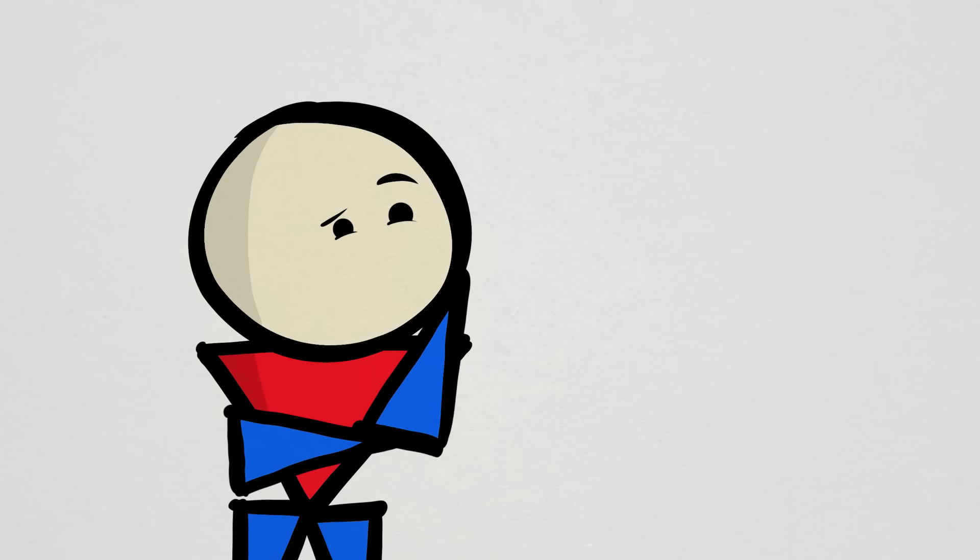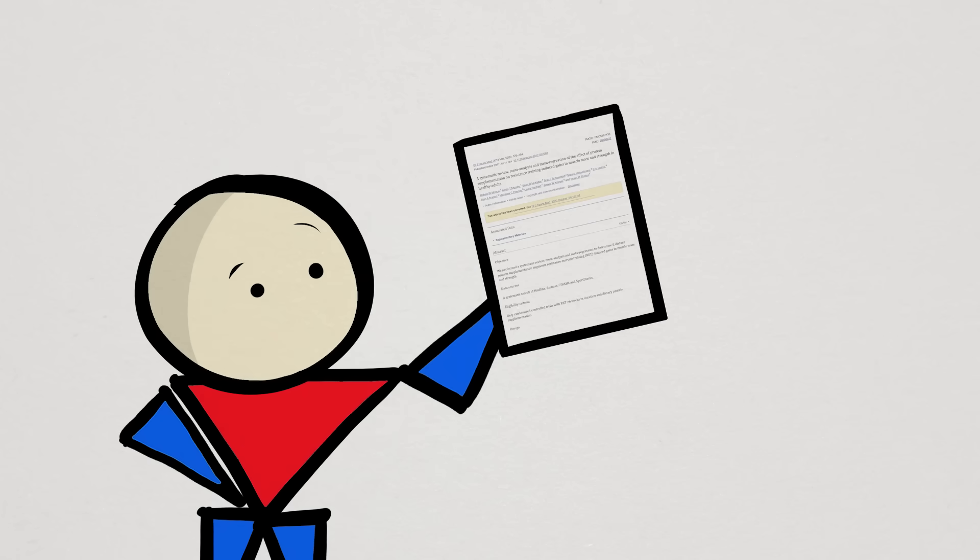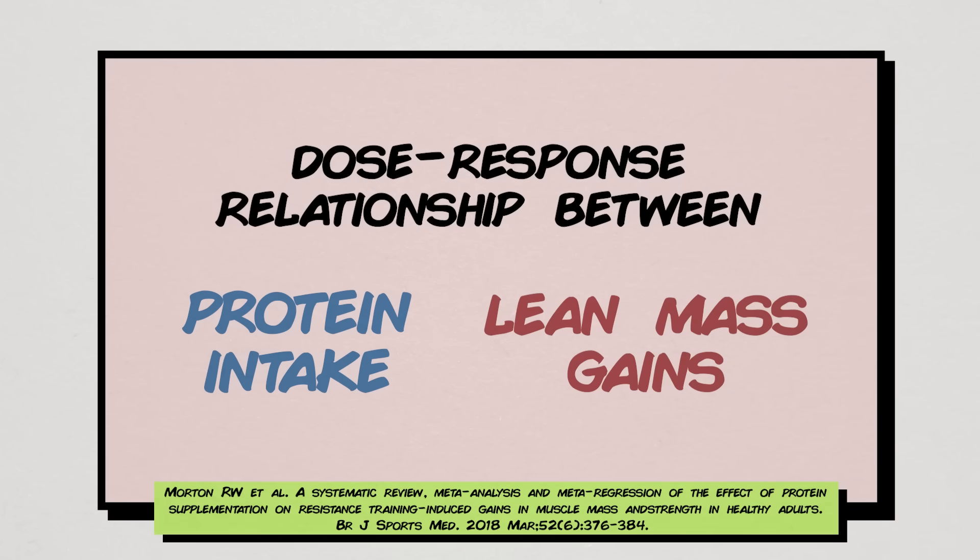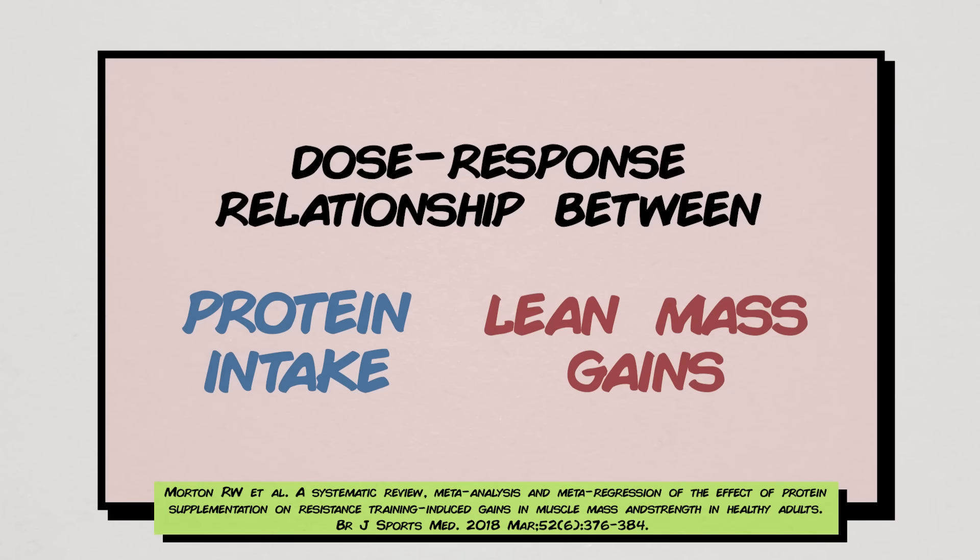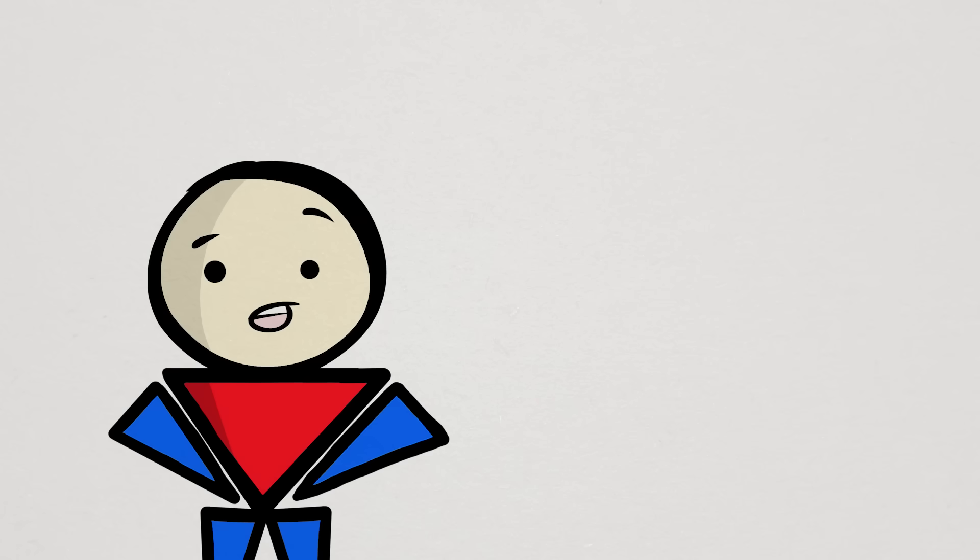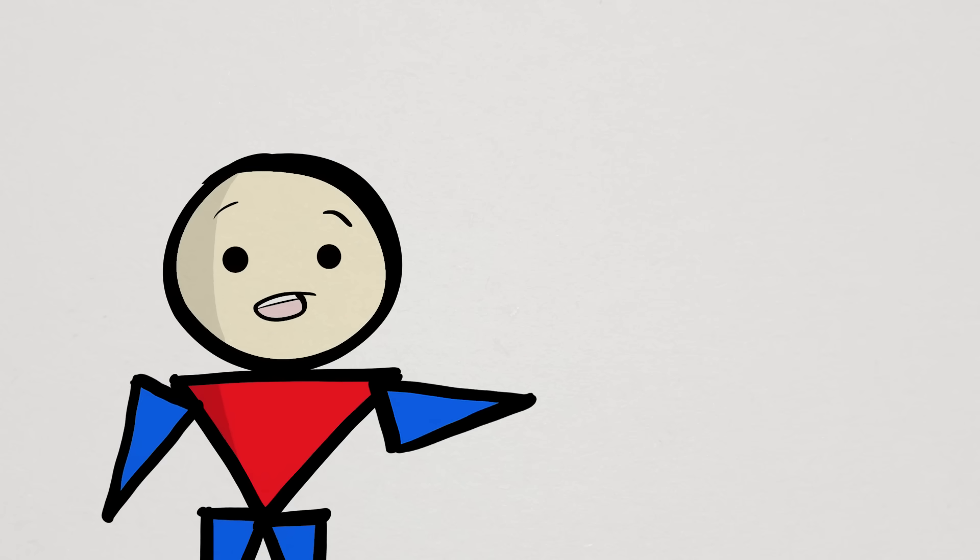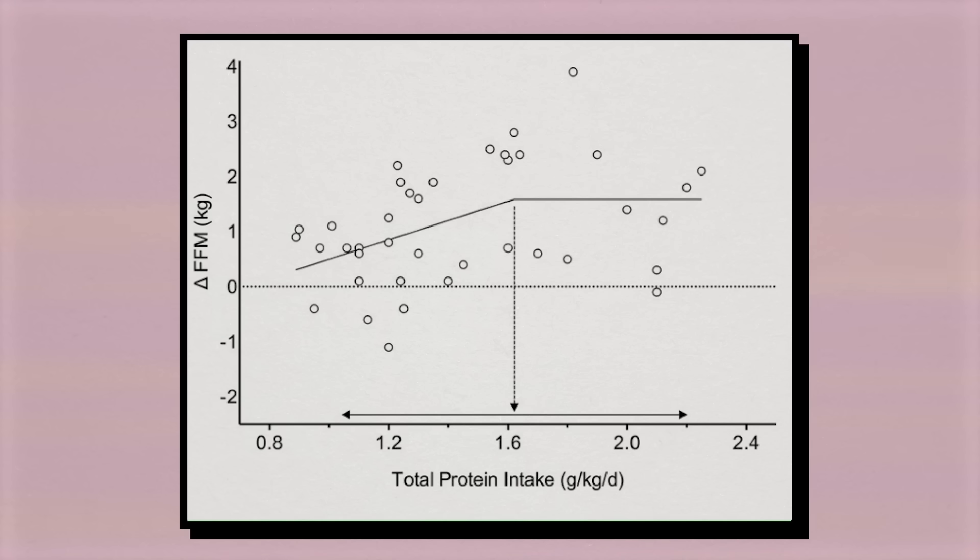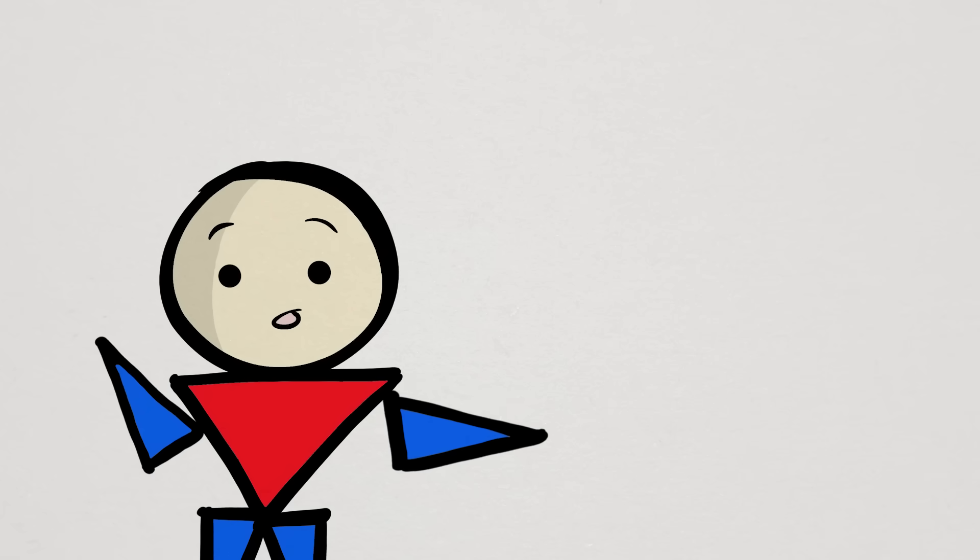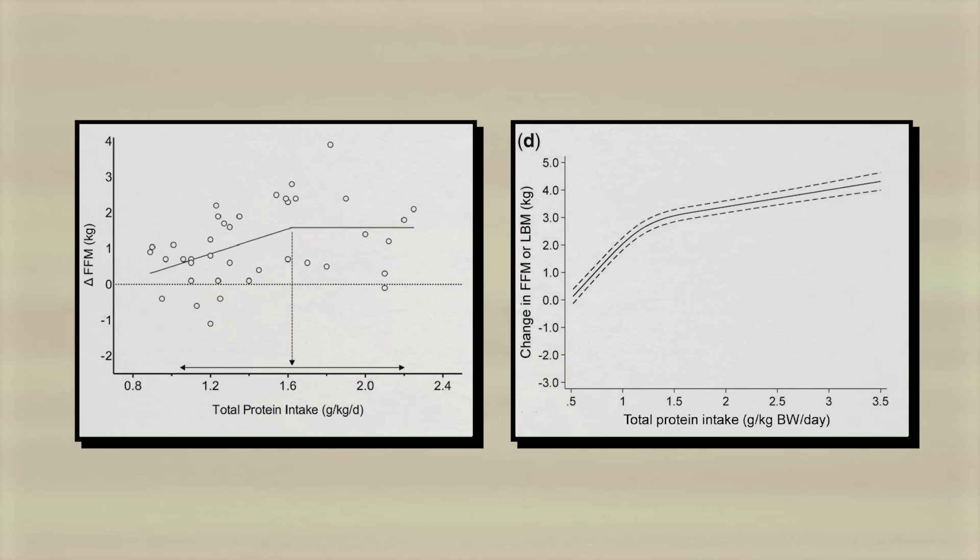Perhaps a more relevant data set for people watching this video is from a 2018 systematic review where Morton and colleagues investigated similar outcomes, but narrowed their scope to healthy young adults participating in resistance training. Although they did not evaluate the specific effect sizes, they did produce their own figure showing the magnitude of the dose-response relationship of protein intake and lean mass.